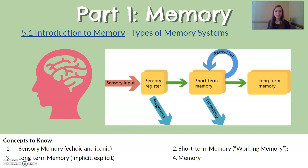The diagram is meant to help us understand the different capacities we have for holding information. The first one is sensory register, or sensory memory.